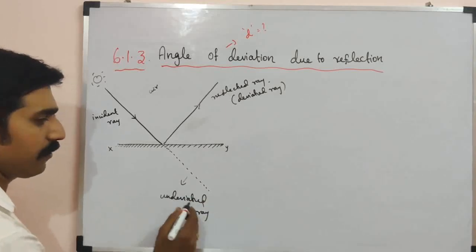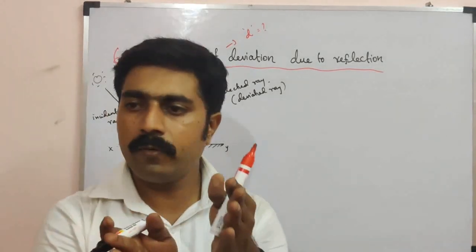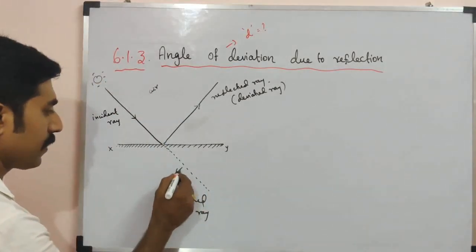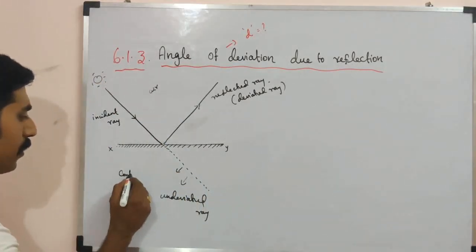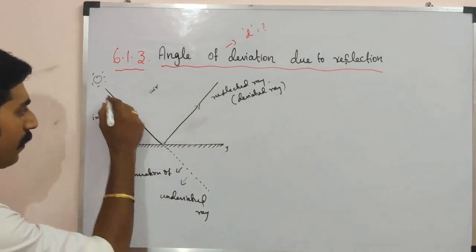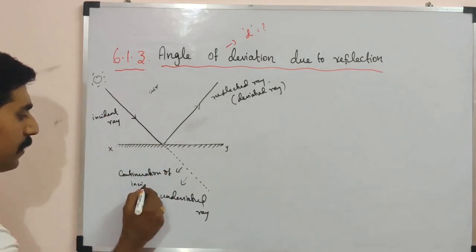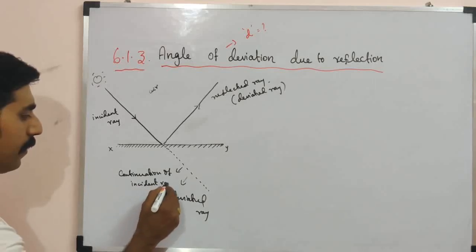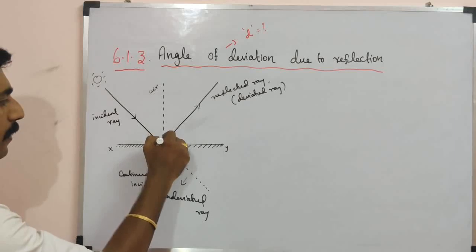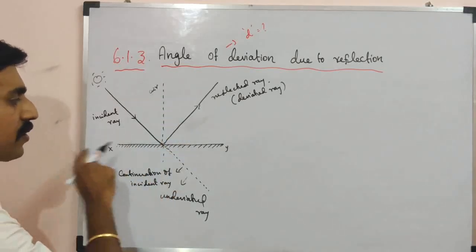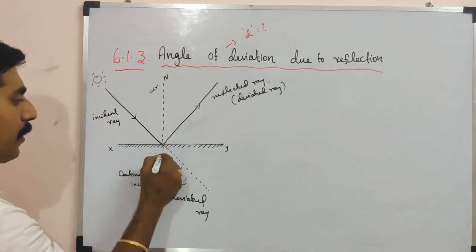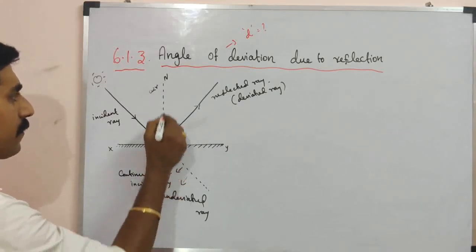The undeviated ray is the continuation of the incident ray. The angle between the undeviated ray and the deviated (reflected) ray is called the angle of deviation, denoted by letter D.